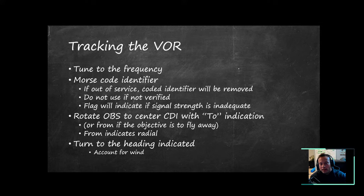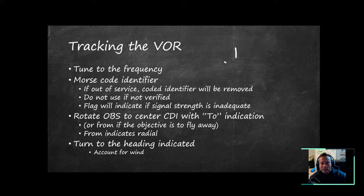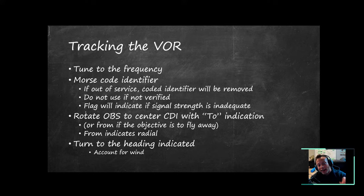To track the VOR: first tune to the frequency — at Paine Field it's 110.6. Dial it in on your navigational radio and listen to the Morse code identifier. If the VOR is out of service, the Morse code won't be broadcast — if you don't hear it, do not use it for navigation. Also if the instrument gives you a flag saying it's not receiving the signal, you can't use it either.